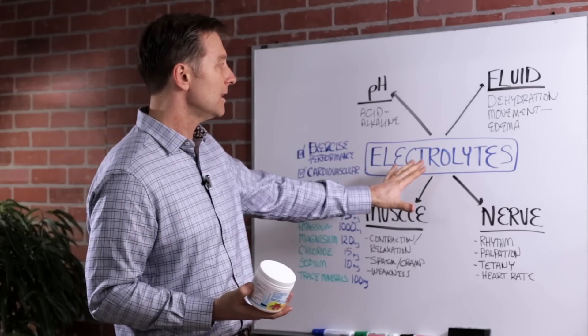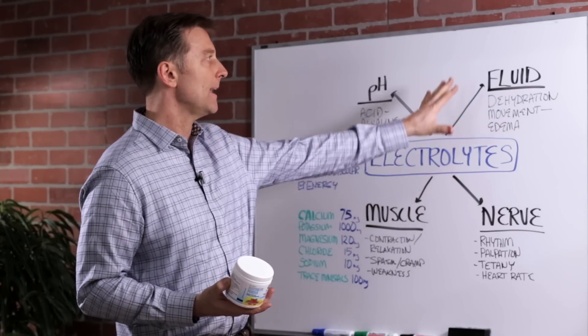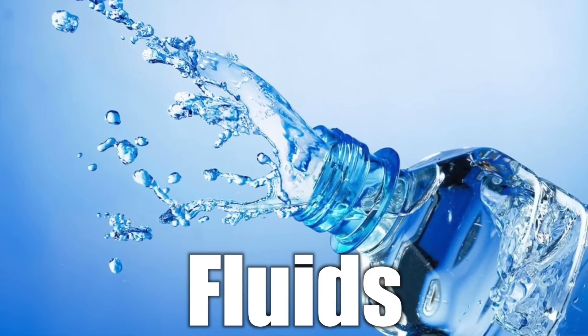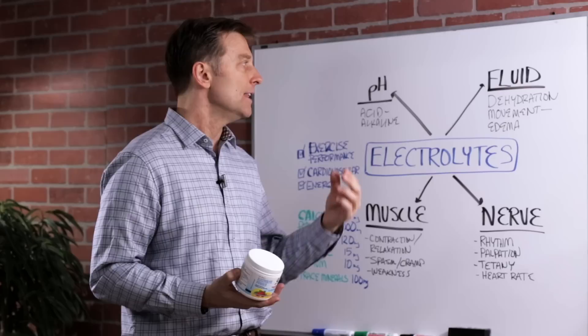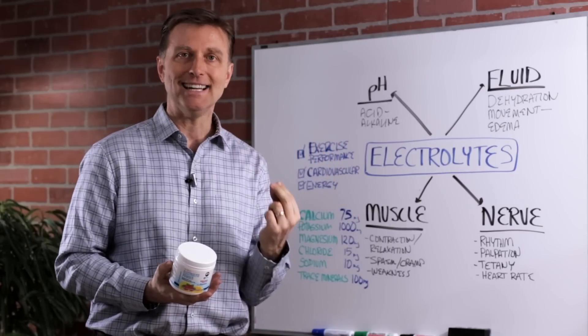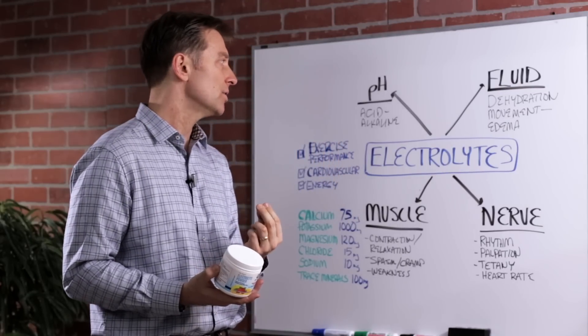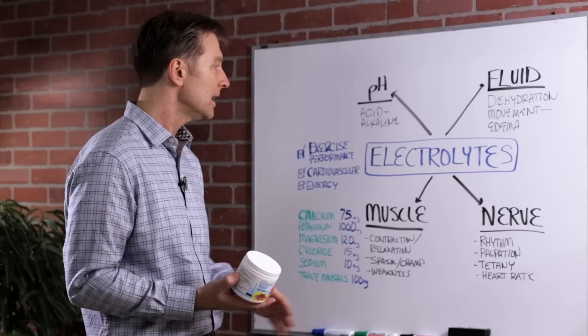So there are four main things that electrolytes do. Number one, they help your fluids. They help hydrate you. They prevent dehydration. They help fluid move in and out of the cell. So it's great for edema or swelling, things like that.